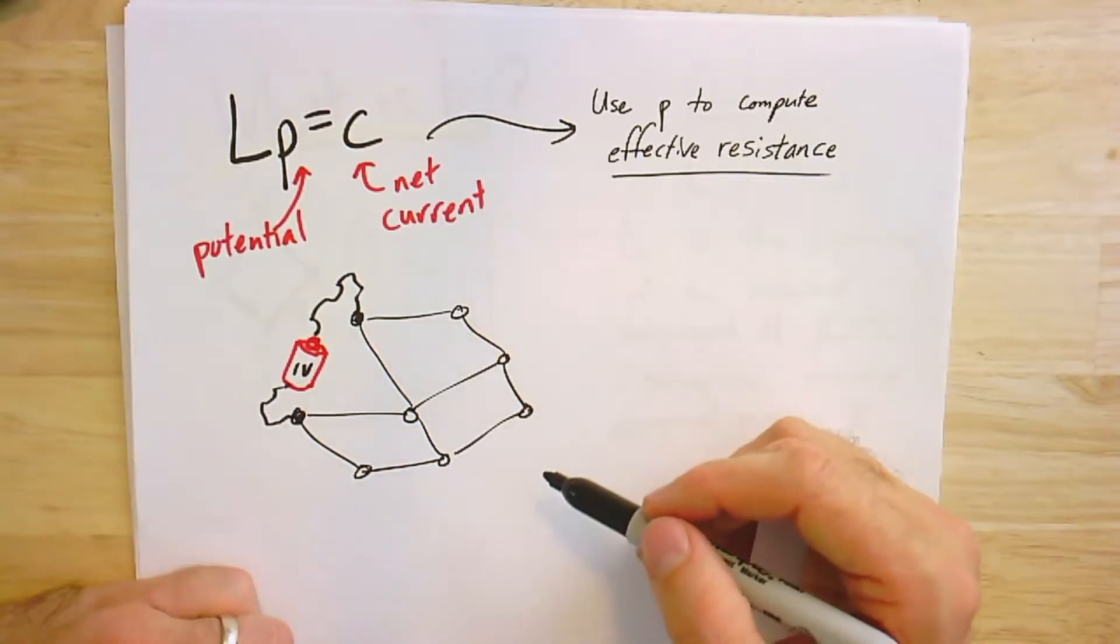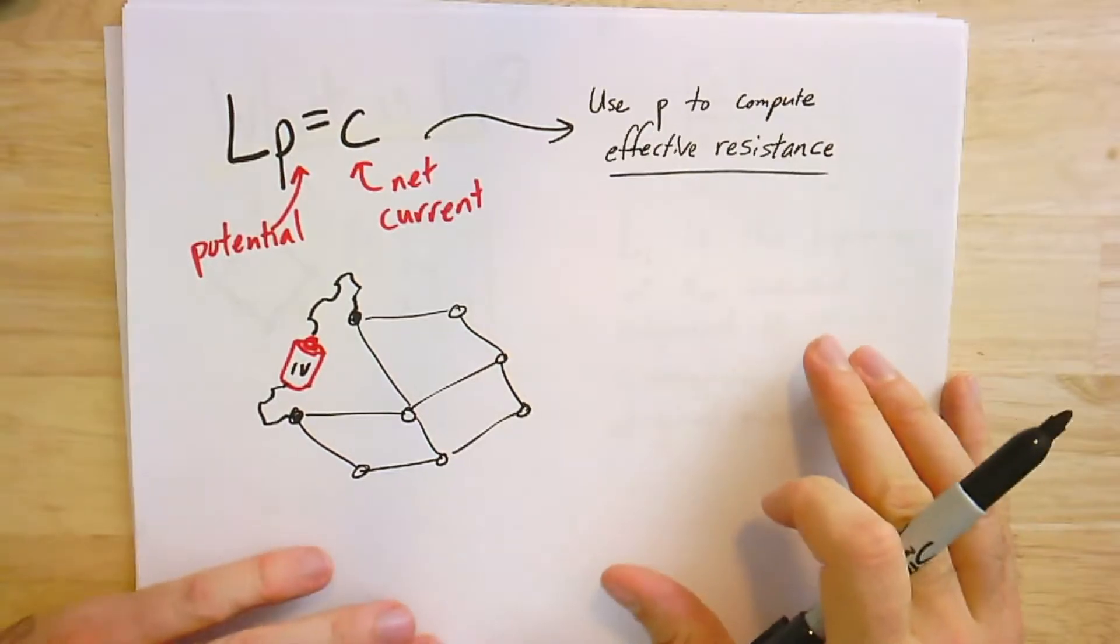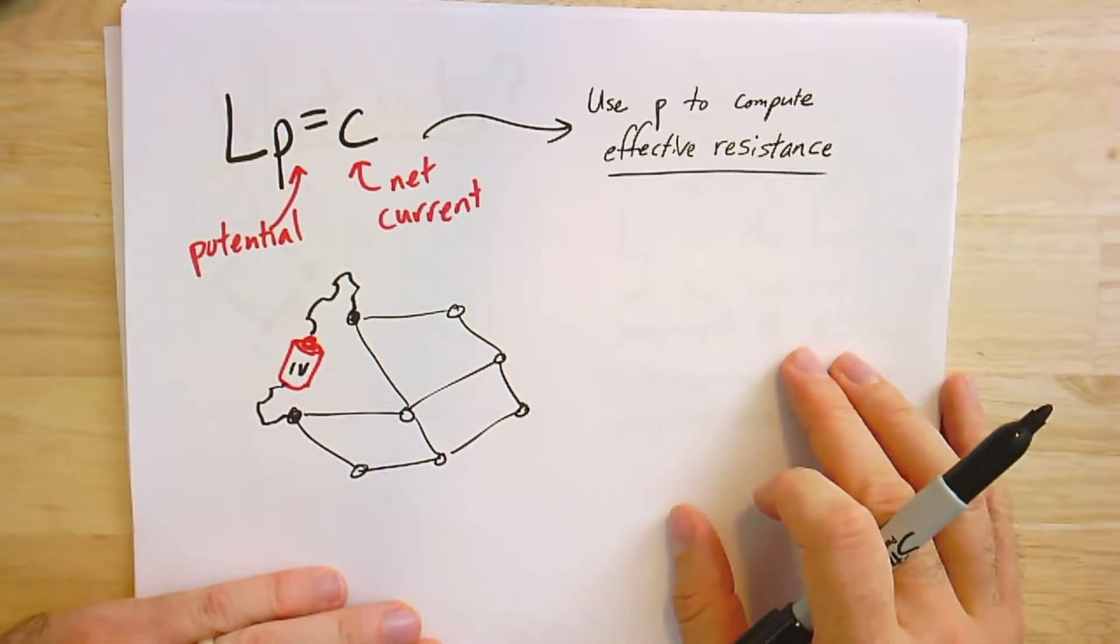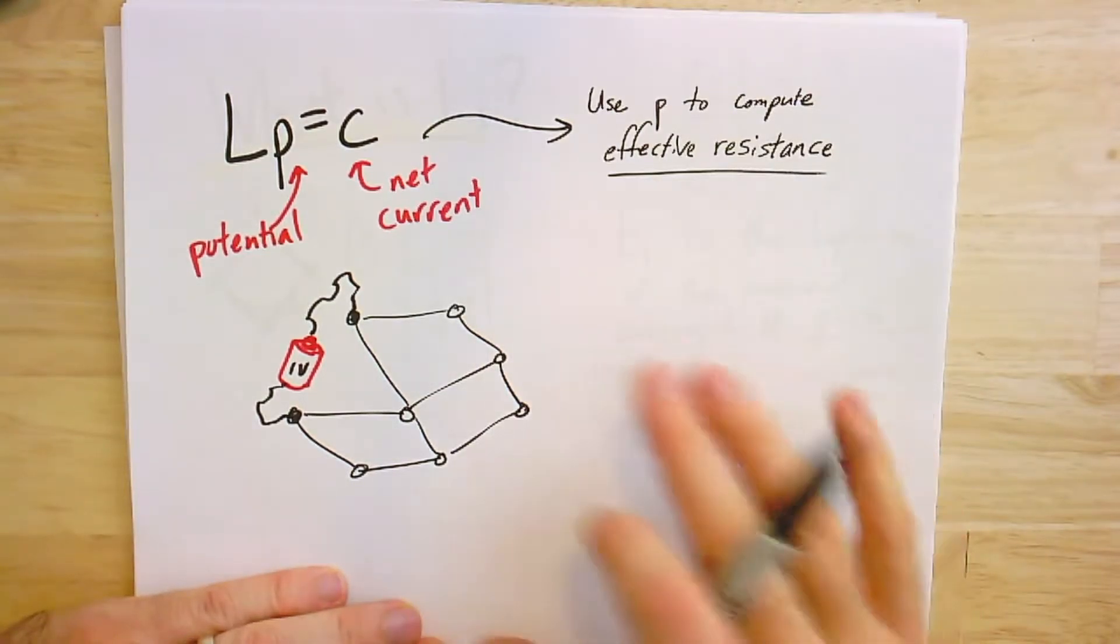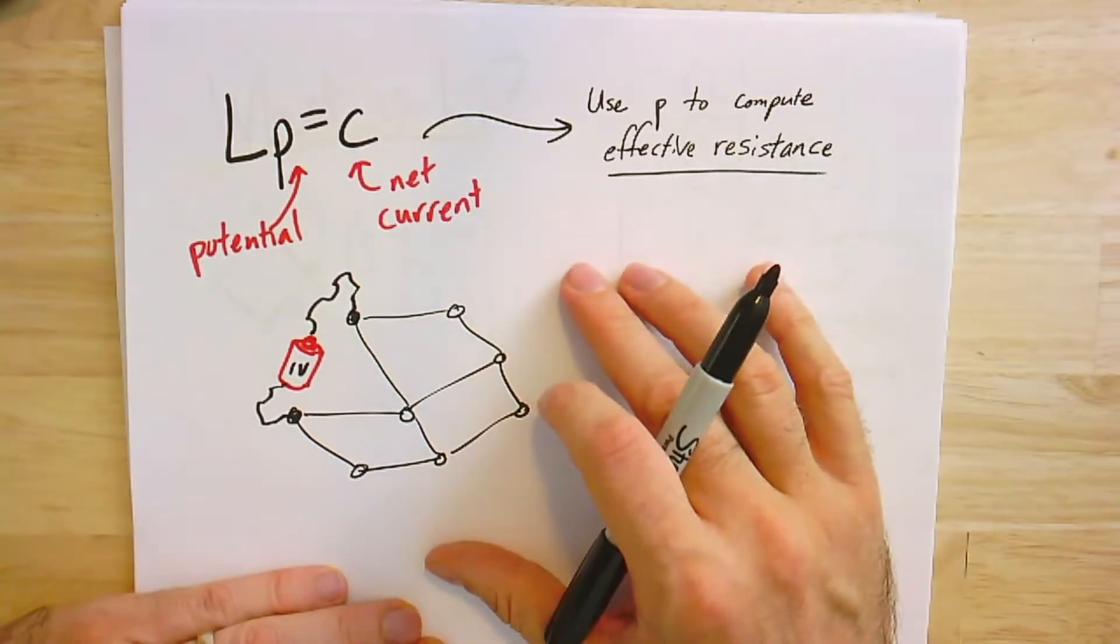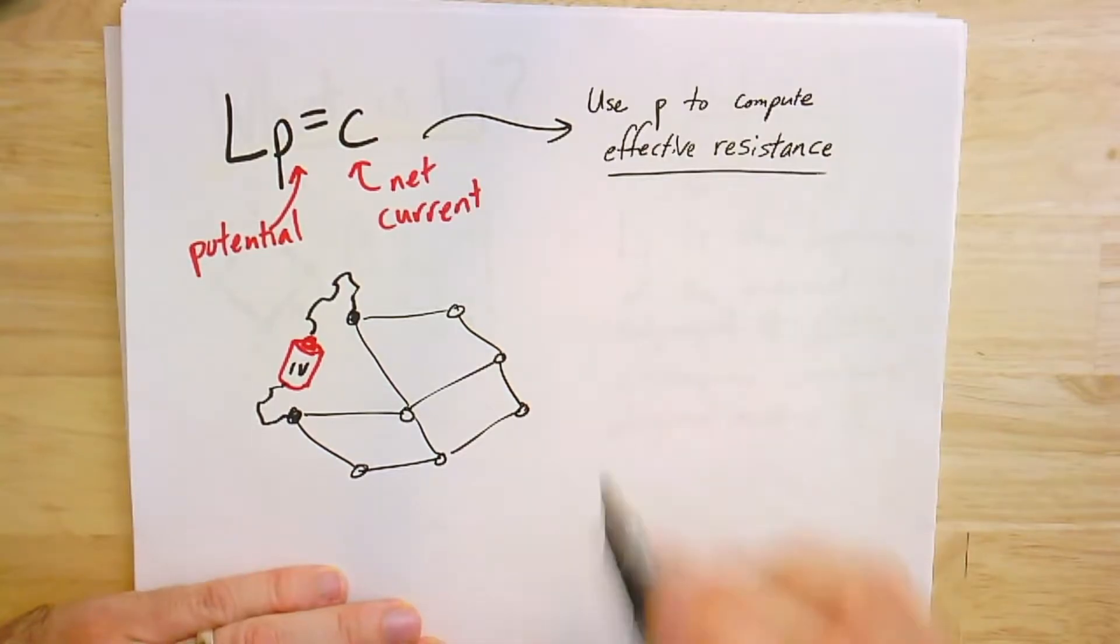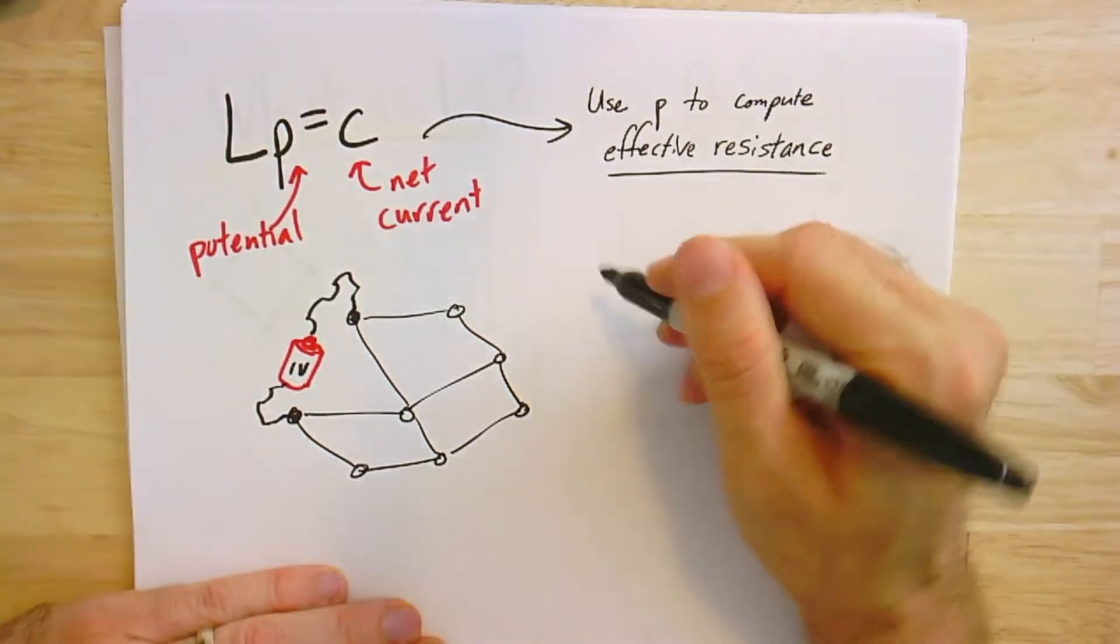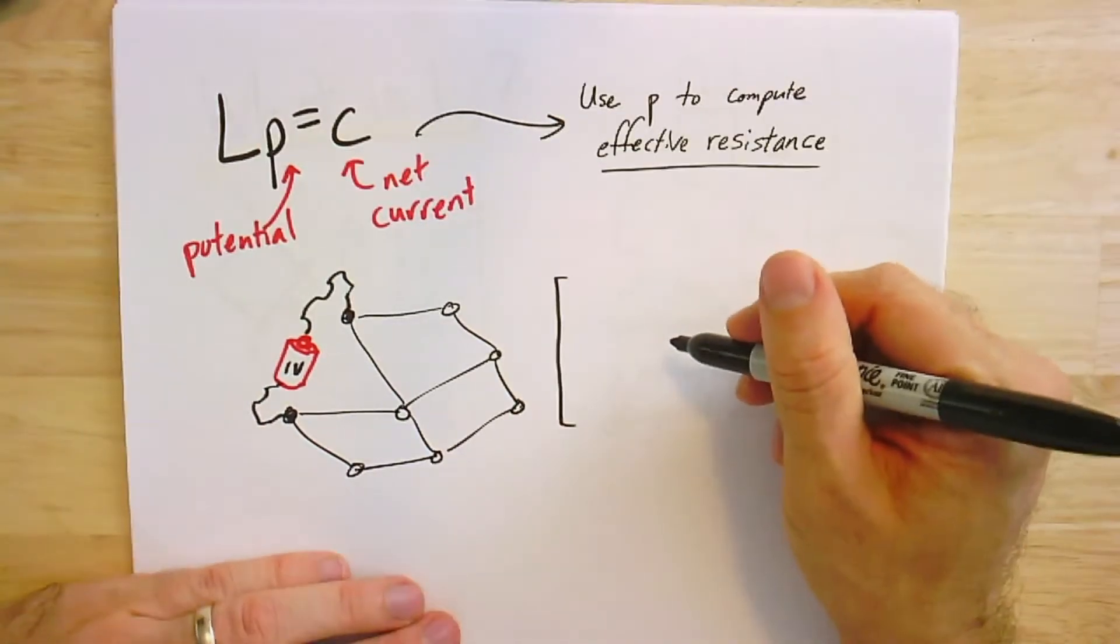And now I might want to compute, say, what maybe the rest of the voltages are, or again, I could try to compute effective resistances here, and maybe the most natural question is just like how much current do we have flowing through here.